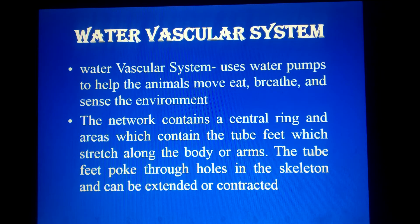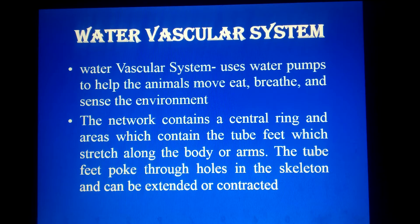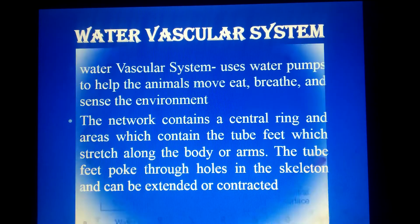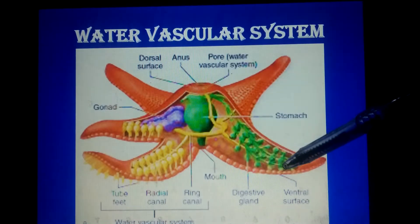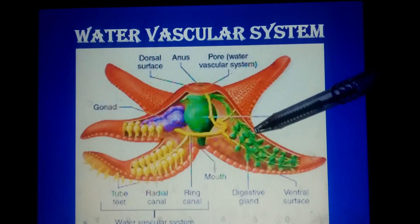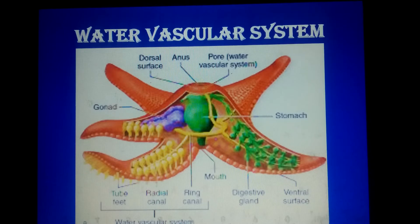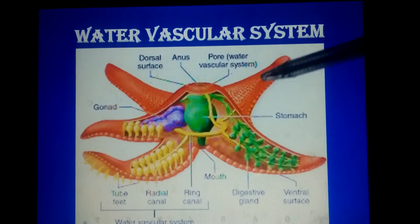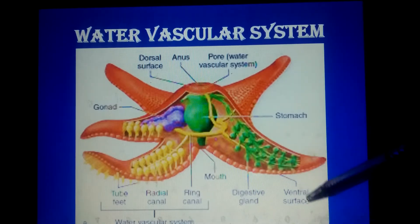The water vascular system uses water pumps to help marine animals move, eat, breathe, and sense the environment. The network contains a central ring and an area with tube feet that stretch along the body and arms. The tube feet poke through holes in the skeleton and can be extended or contracted, pumping water in and out, helping in respiration, circulation, and excretion.